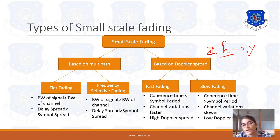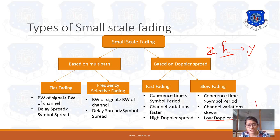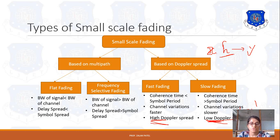Low Doppler spread means it takes more time. Doppler spread is inversely proportional to time period — sigma is inversely proportional to 1 upon T. So if T increases, Doppler spread reduces, causing low Doppler spread for slow fading, and high Doppler spread for fast fading. These are the types of small scale fading.